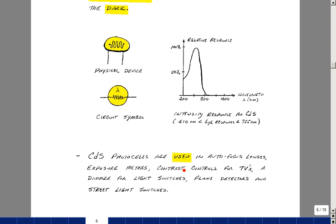You'll find that these cells are used in autofocus lenses for exposure meters, for contrast controls in televisions, for dimmers, switches, flint detectors, and even for streetlights.